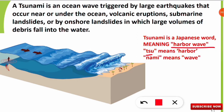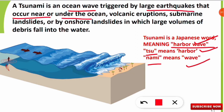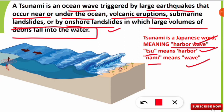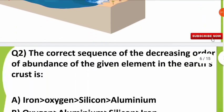'Tsu' means harbor and 'nami' means wave in Japanese, so together it is a Japanese word meaning harbor wave. A tsunami is an ocean wave triggered by large earthquakes that occur near or under the ocean, volcanic eruptions, submarine landslides, or onshore landslides in which large volumes of debris fall into the water. As shown in the picture, when an earthquake takes place, the ocean is triggered and results in a tsunami. Let's move to the next question.